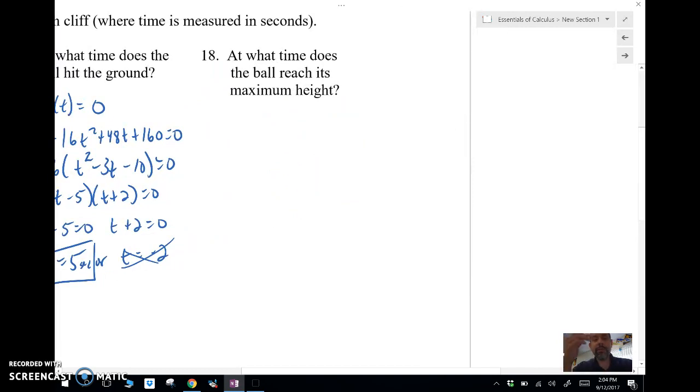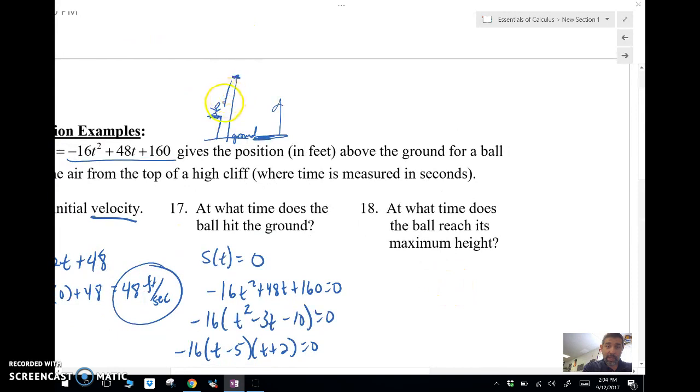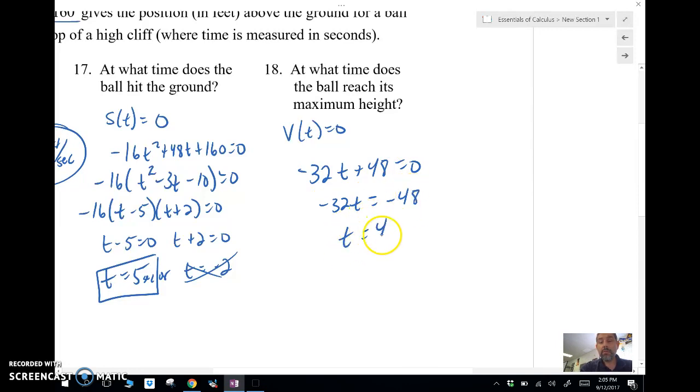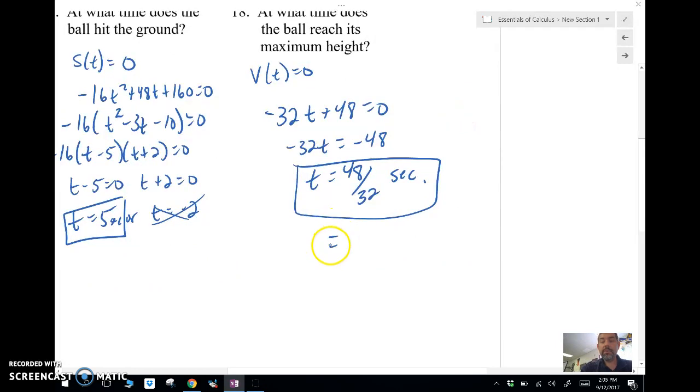At what time does the ball reach its maximum height? So it's going to reach its maximum height right here. And right there, the slope of the tangent line is 0. The maximum height is going to be when the velocity goes from being positive to negative. So the velocity is going to be 0. So I'm going to take my velocity function, which I found in number 16. Negative 32t plus 48. I'm going to set that equal to 0. And I'm going to solve negative 32t equals negative 48. And t equals 48 over 32 seconds, which is about 1.5 if you want to reduce it.